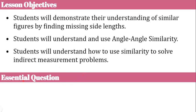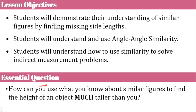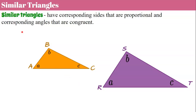Here's our question: how can you use what you know about similar figures to find the height of an object much taller than you? This is what you'll discover today. Let's review the definition of similarity. Similar triangles are triangles that have corresponding sides that are proportional and corresponding angles that are congruent.